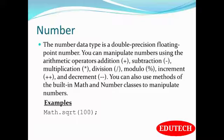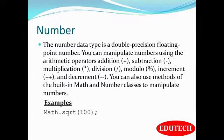Number: the number data type is a double-precision floating-point number. You can manipulate numbers using arithmetic operations like addition, subtraction, multiplication, division, modulo, increment, and decrement. You can also use methods of the built-in Math and Number classes to manipulate numbers. Example: Math.sqrt(100) — the answer will be 10.